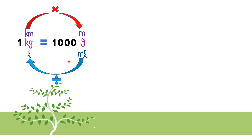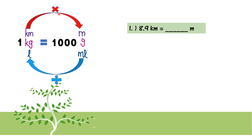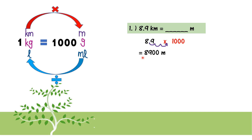From right to left, we divide by one thousand. For example, 8.9 km converted to meters — km is on the left, going to the right, so I multiply by one thousand. I move the decimal point three steps to the right: one, two, three. I get eight thousand nine hundred meters.